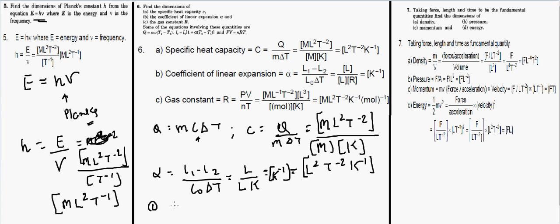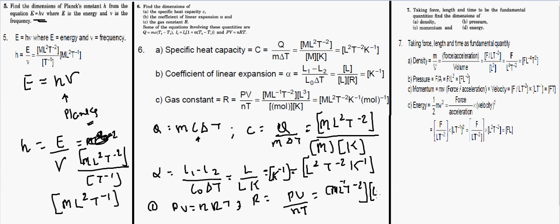For the gas constant R, from PV = nRT, we get R = PV/(nT). Pressure is ML⁻¹T⁻², volume is L³, n is in moles (mol), and temperature is kelvin (K). After calculation, you can verify the dimension of R yourself.